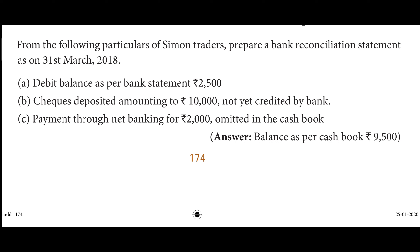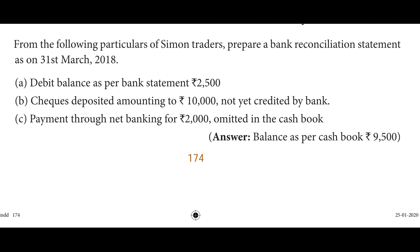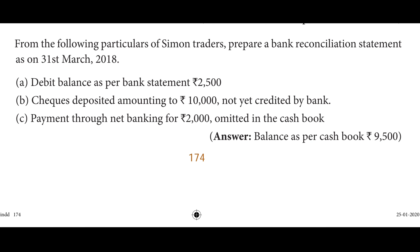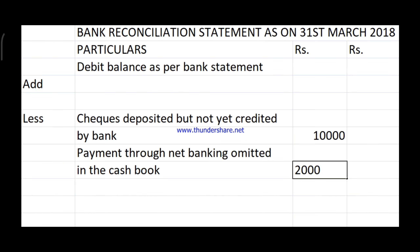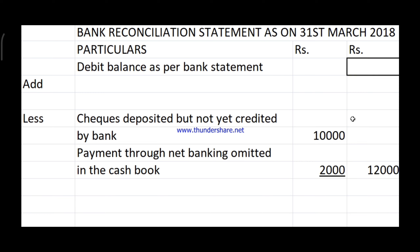Next we have: payment through net banking for 2,000 omitted in the cash book. You've made a payment but haven't recorded it in the cash book, so your cash book balance is more and your passbook is less. Since this payment was done through net banking, the bank pays from your account, so we put this also in the less category.